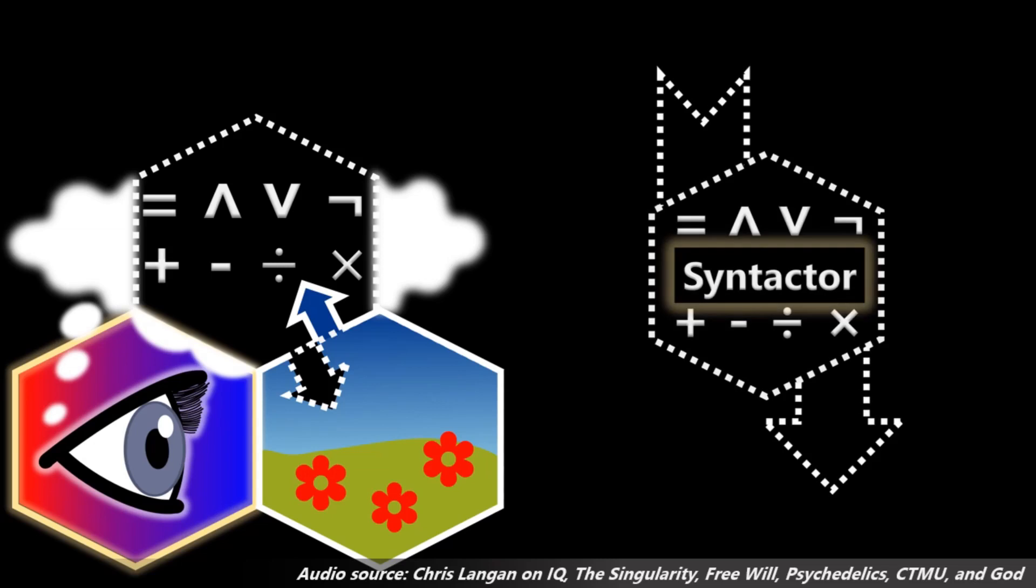The syntactor is a generalization of a computational acceptor. It's a proto-computational generalization of what in computation theory is called an acceptor. An acceptor is just a processing unit that accepts input from the external environment, applies a kind of syntactic filter to decide what gets through and in what form, and then processes it and returns it to the environment.